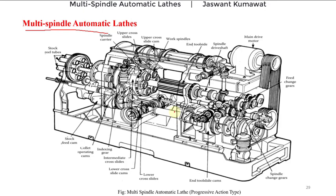Nowadays, computer numerical control multi spindle automatic lathes are also widely used. In these multiple spindle automatic lathes, a number of operations can be performed as one workpiece is moved through 12 cutting tools — six tools are mounted on the end tool slide and six are mounted on cross slides on the periphery of the spindle carrier.